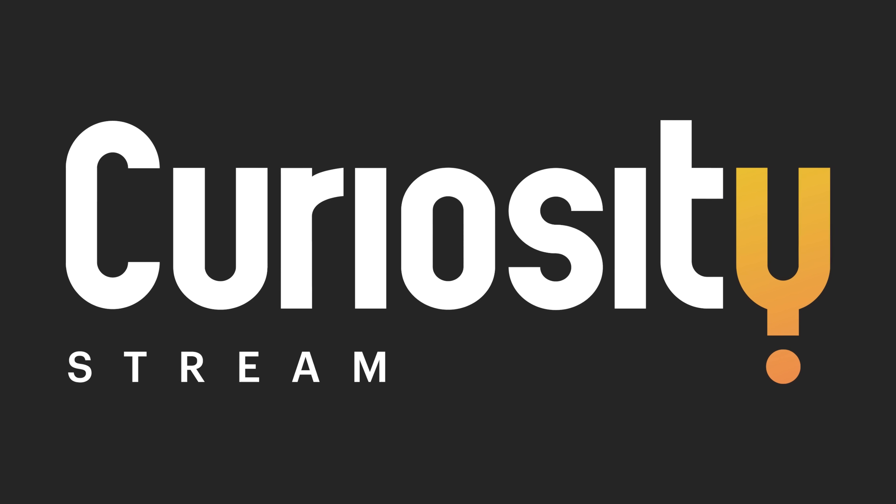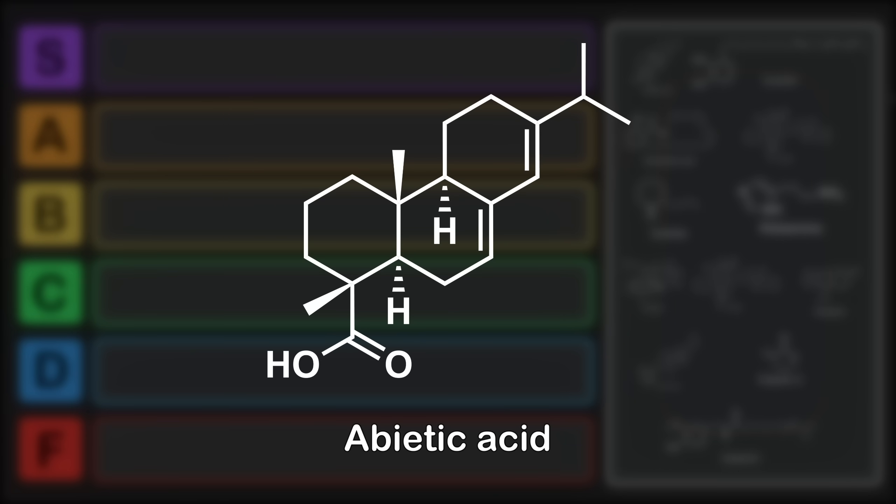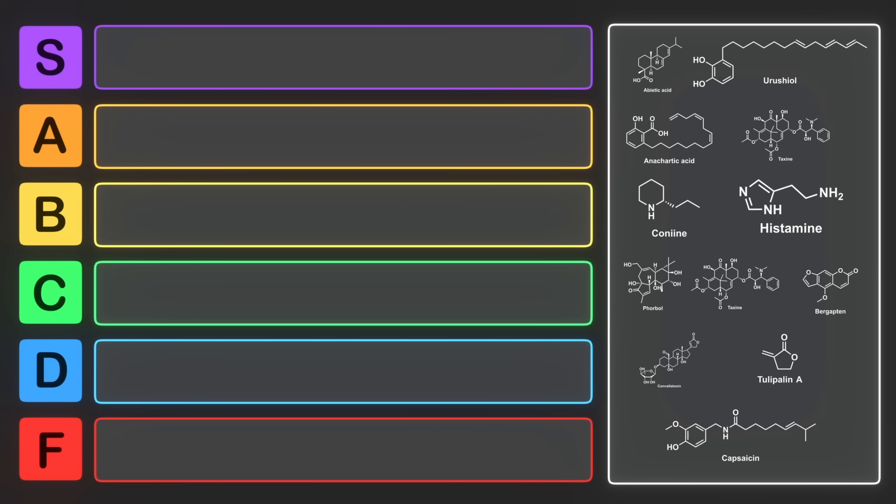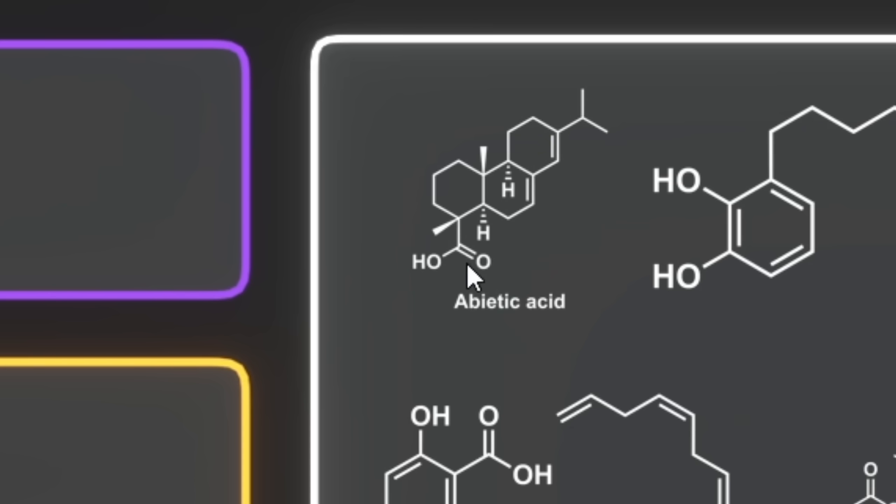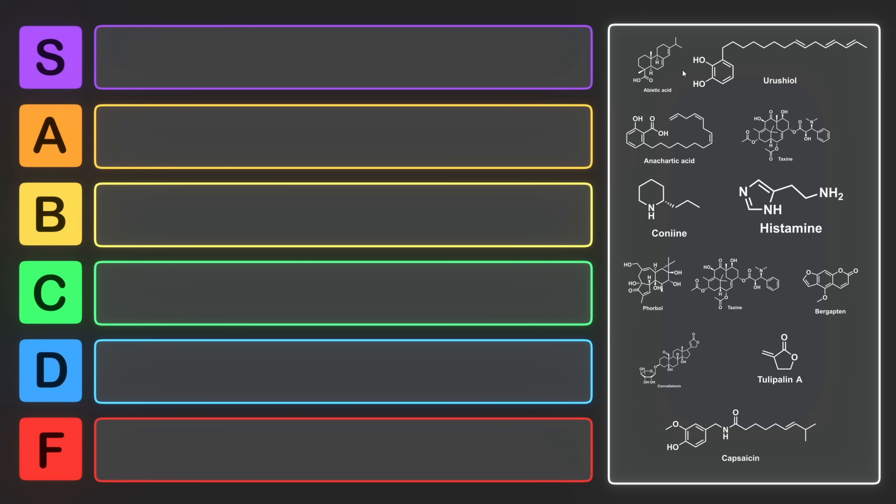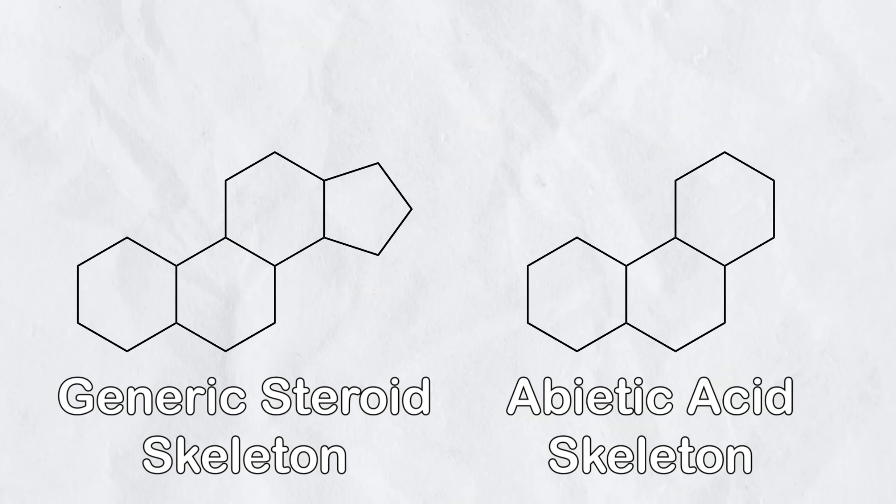I want to thank CuriosityStream for their support of this channel. The first molecule is abeitic acid. Abeitic acid is primarily found in pine trees or conifers. This has a carboxylic acid group, and it's also a diene. Aside from this, it roughly looks like it's related to a steroid. Steroids have three cyclohexane rings as well as a cyclopentane ring, although abeitic acid only has three cyclohexane rings, hence why it's only slightly related.